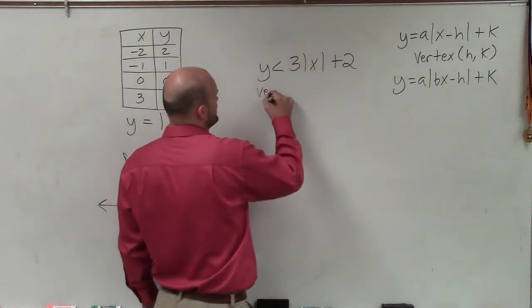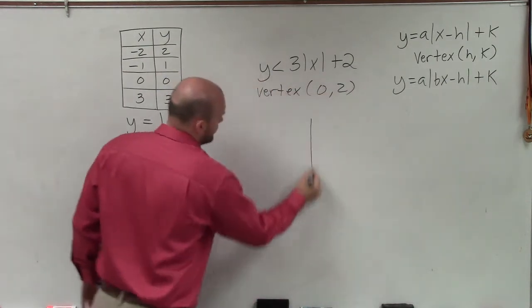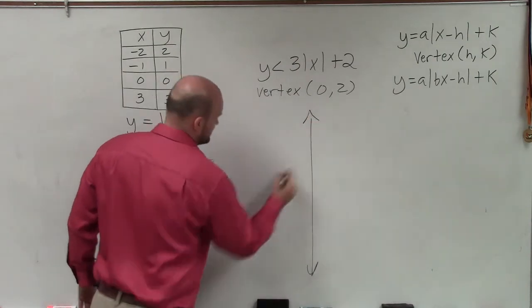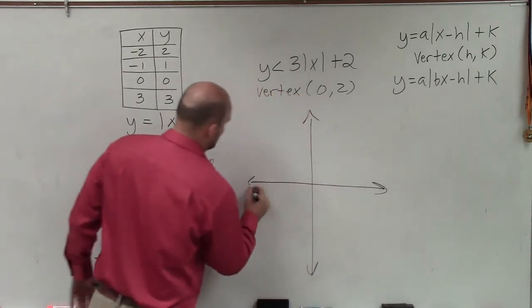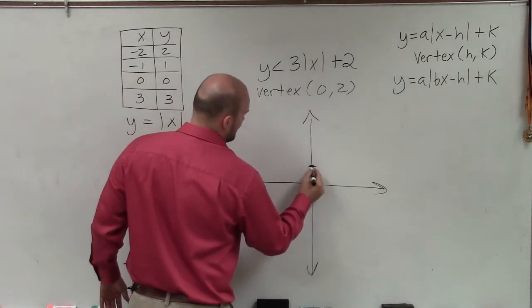So therefore, my vertex is going to equal (0, 2). So when starting to graph this, all I'm simply going to do is now I'm moving my whole graph up two units, where now my new vertex is.